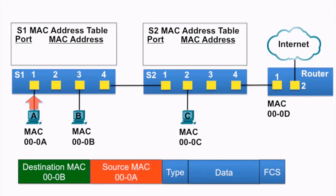S1 receives the Ethernet frame, examines the source MAC address, and notices that this MAC address is not in its MAC address table, so it adds the MAC address and the incoming port number.